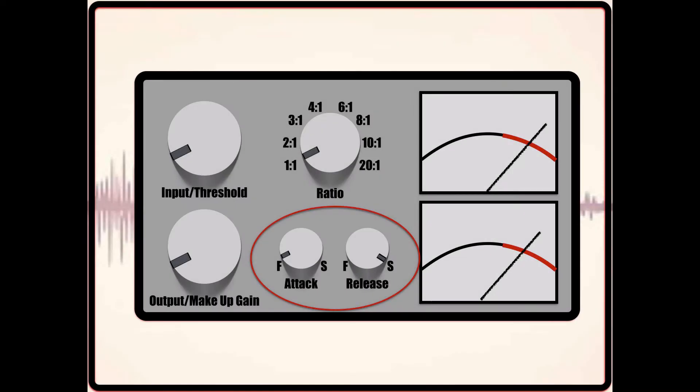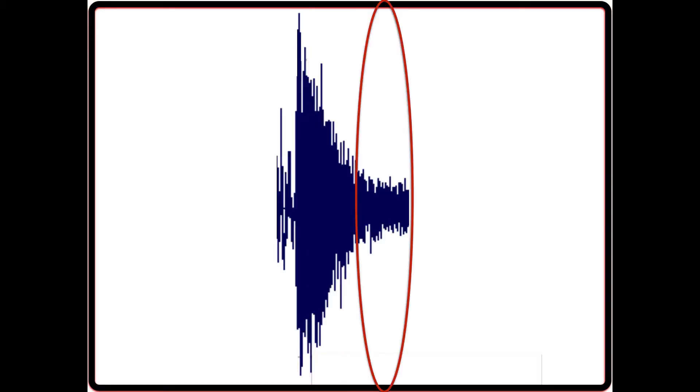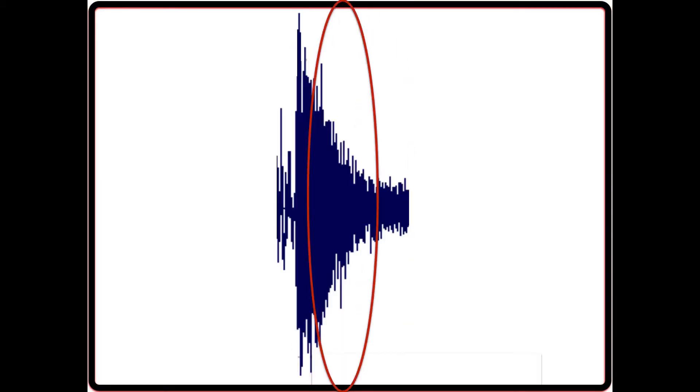So in this episode, we are going to address the attack and release controls. The reason that I want to start with these parameters is that they actually shape how the compressor sounds on a specific element in the mix. We know that the attack and release controls what part of the sonic element will be compressed. The transient, the sustain, or somewhere in the middle. So generally speaking, let's go over some specific settings and what scenarios they could possibly help with.